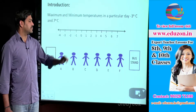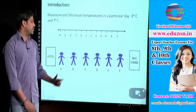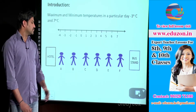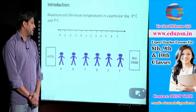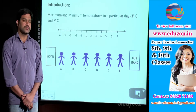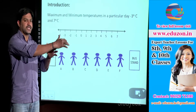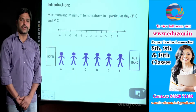Look at the figures. How many people are there on the board? 6 people are there: A, B, C, D, F. On one side there is a bus stand, and on the other side there is a hotel.